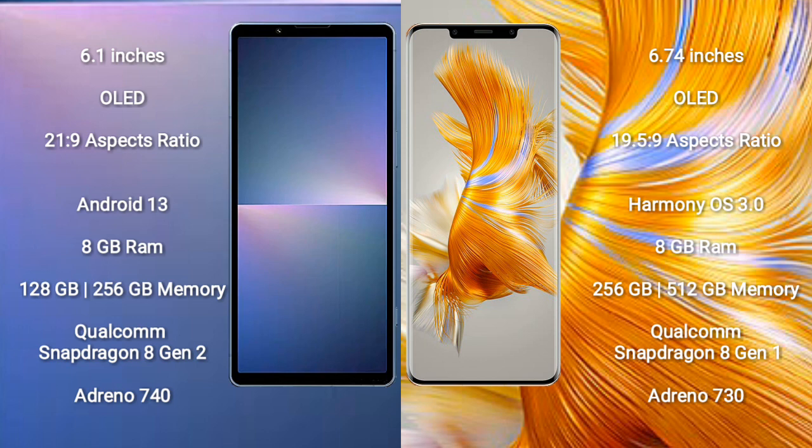The Sony Xperia 5 Mark V runs on the Android 13 operating system, while the Huawei Mate 50 Pro runs on the HarmonyOS operating system. The Sony Xperia 5 Mark V comes with 8GB RAM and 128GB to 256GB internal storage, with a Qualcomm Snapdragon 8 Gen 2 processor.